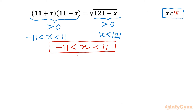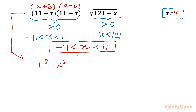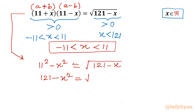Now let us solve the given radical equation. On the left-hand side, we can see it is of the form (a + b)(a − b), so we apply the difference of two squares formula: a² − b². Writing it out: 11² − x² = √(121 − x), which gives us 121 − x² = √(121 − x).